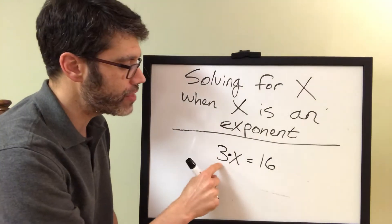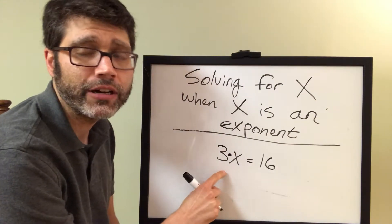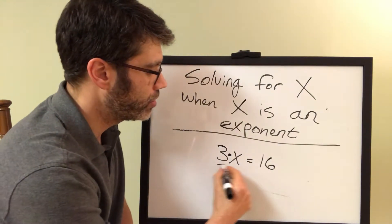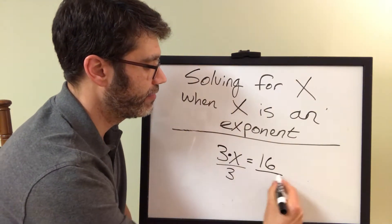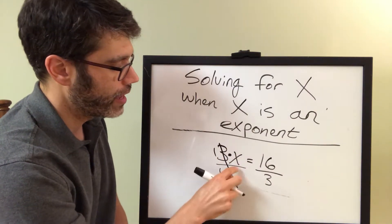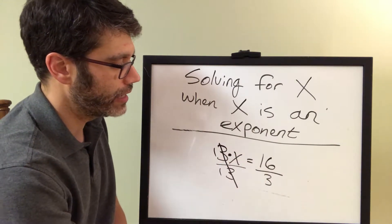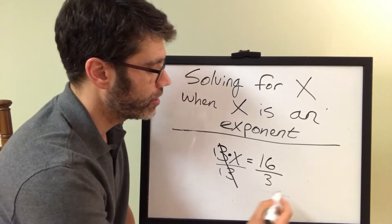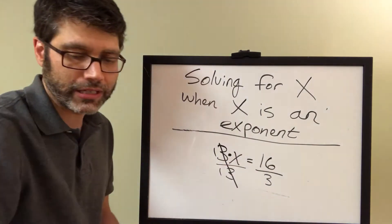How do you break the bond of multiplication here? You divide. So it would be dividing. You divide by 3, so that goes away, and that just becomes 1, and the x is isolated, and now it's 16 thirds. So x equals 16 thirds.